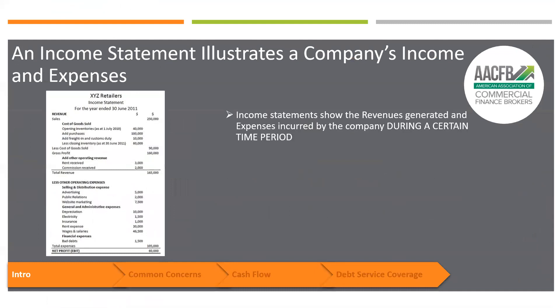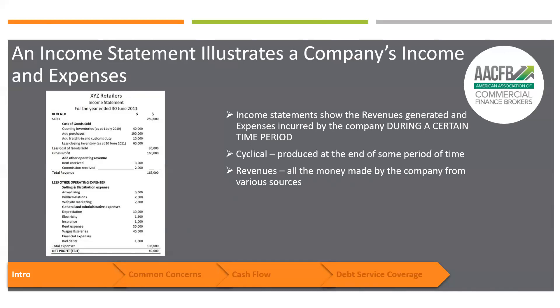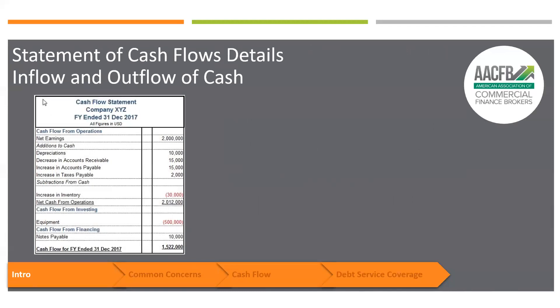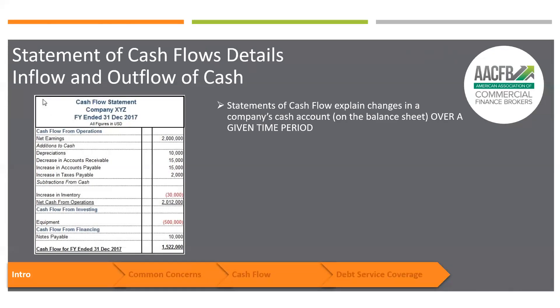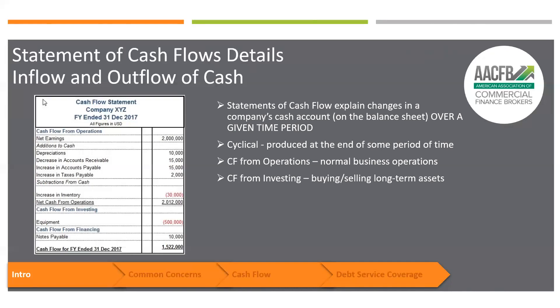This is an income statement. An income statement shows the revenue generated during a certain time period. Revenues are what the company made from all the various sources of income — there are gross revenues. Expenses are all the money that the company has spent during the time period. The cash flow statement talks about how much cash the company has. It's cyclical. Cash flow from operations is during the normal business operations — they buy and sell assets, take out and pay down loans, buy and sell stocks and bonds.